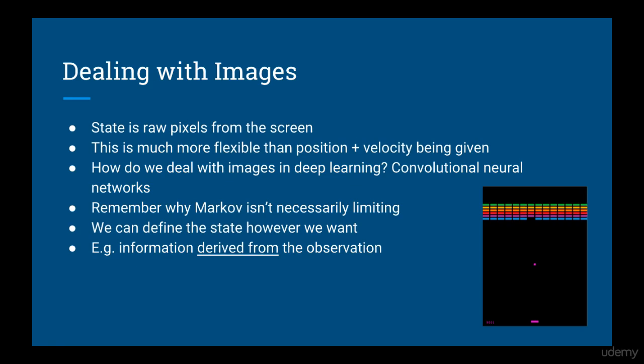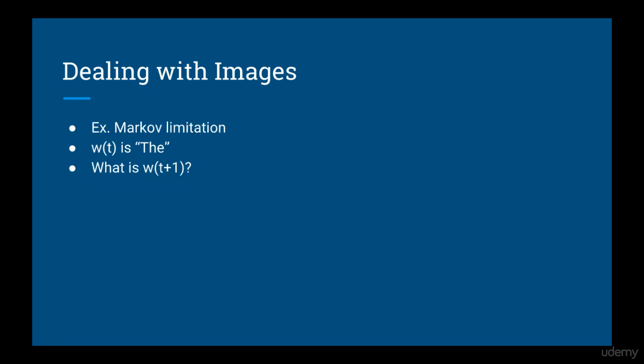The next technique isn't a trick per se, but it has something to do with the fact that the states are raw pixels of the screen. These are images, of course. As you know, the way we deal with images in deep learning is to use convolutional neural networks. One problem with still images that I showed you in the introduction is that you can't tell how things are moving. For example, in breakout, you can see the ball, but you can't determine its velocity from just one image. Therefore, we can't only use just this one image. But remember what we learned about in the last reinforcement learning course, about why the Markov property, which may seem limiting because it says that the current state depends only on the most recent previous state, is not necessarily limiting since we can be the ones who define the state.